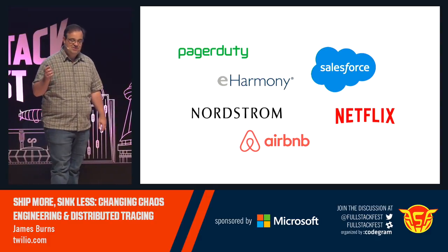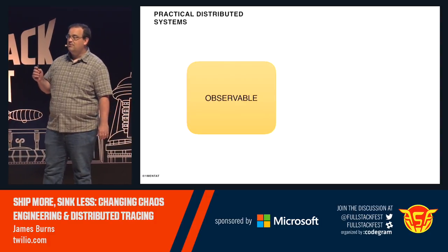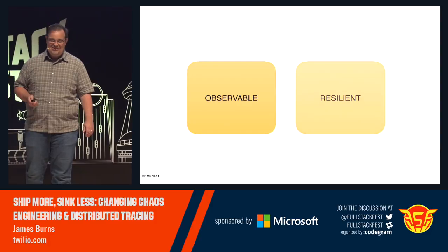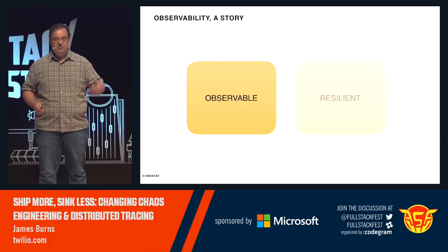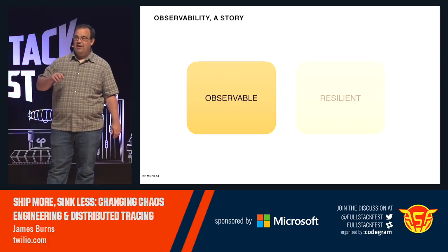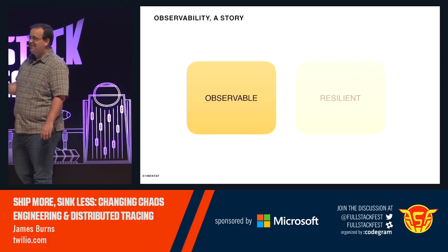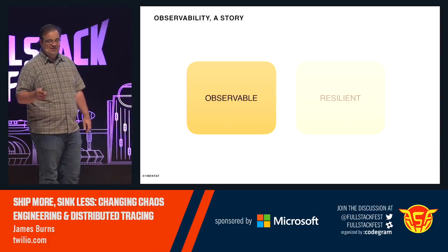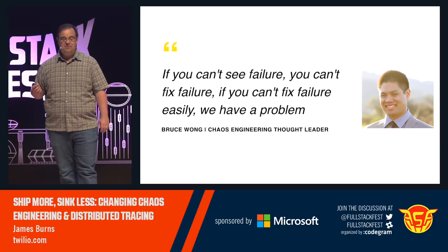I mentioned practical distributed systems — let's talk about what that is. I propose that a practical distributed system is observable and resilient. In order for a system to be practical and usable, it needs to be observable. You need to be able to see whether the system is doing what it's supposed to do, and if not, why. As chaos engineering thought leader Bruce Wong says: if you can't see failure, you can't fix failure.